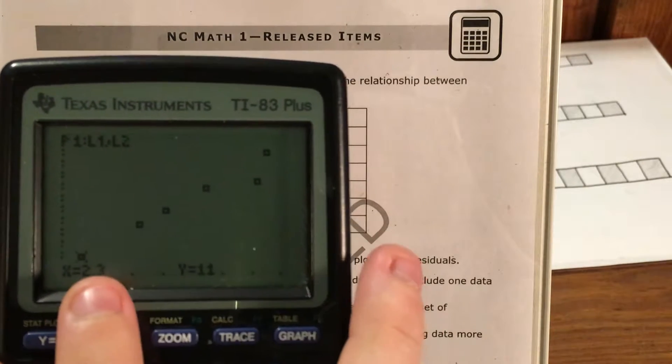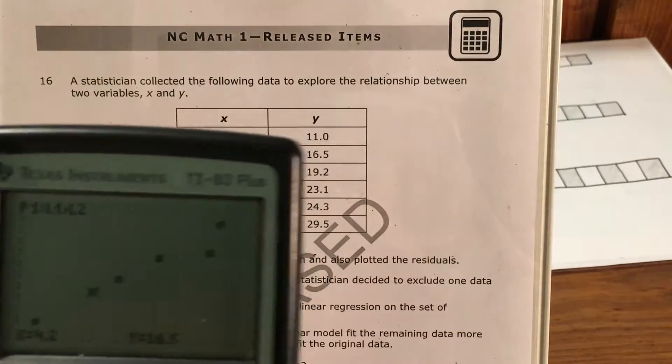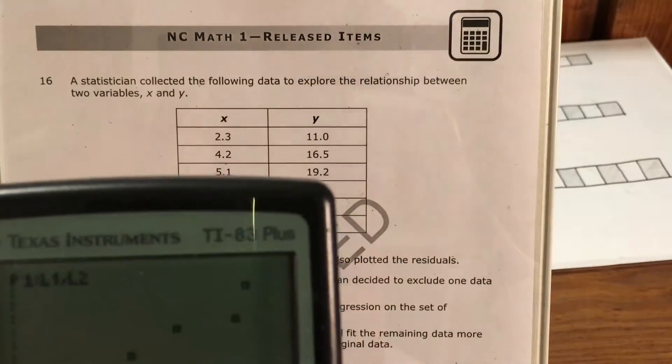So if I see x equals 2.3 and y equals 11, that's exactly what I was expecting. 4.2 and 16 and a half, I can see that here, and so on.